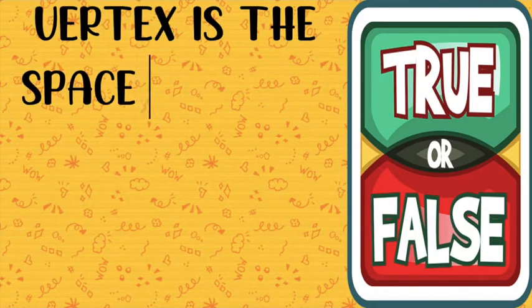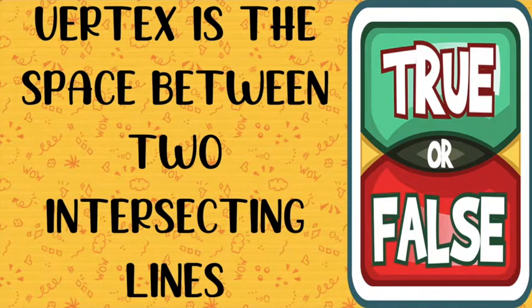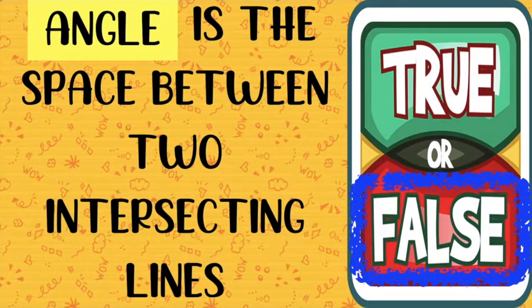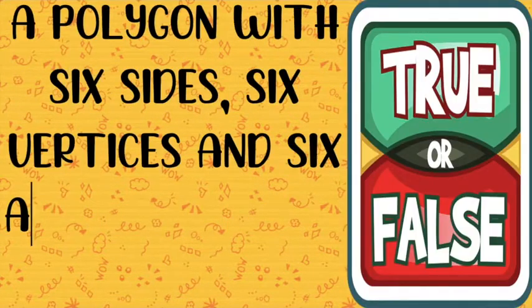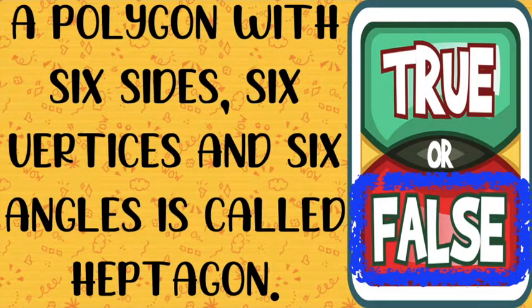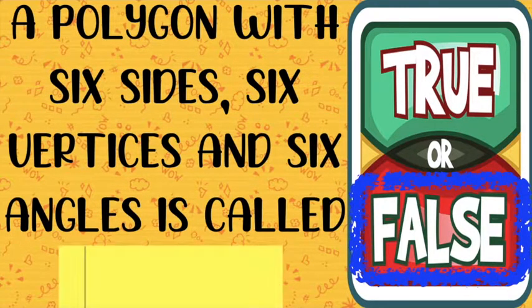How about this one? Vertex is the space between two intersecting lines. Is it true or false? Good job, children — it is false. Why? Because it's not the vertex, it is the angle. Angle is the space between two intersecting lines. How about this? A polygon with six sides, six vertices, and six angles is called heptagon. Is it true or false? Very good, children — this is false. It's not heptagon. Remember, heptagon has seven sides. So when you're talking about six sides, six vertices, and six angles, that is hexagon.